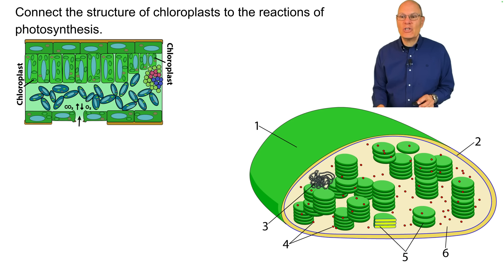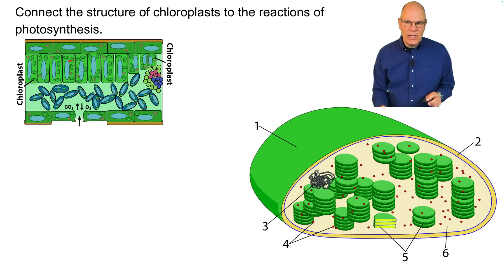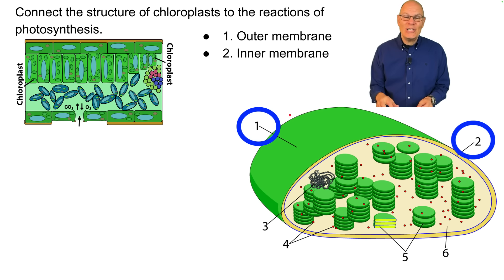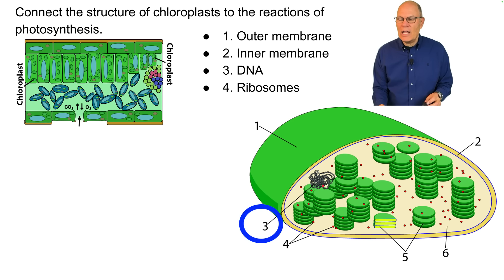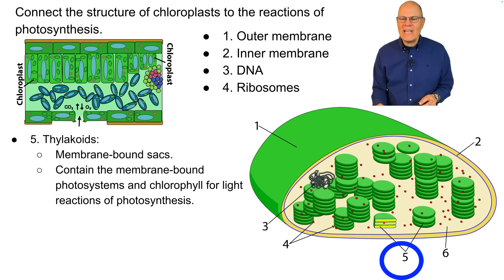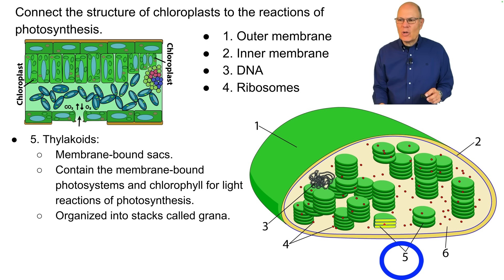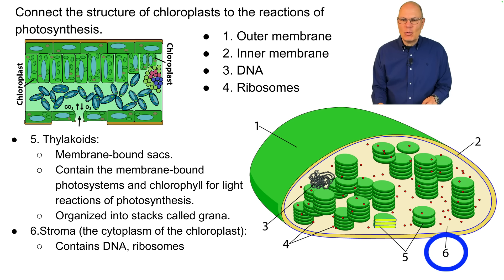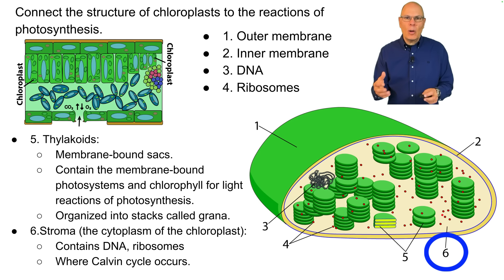Connect the structure of chloroplasts to the reactions of photosynthesis. Chloroplasts are found in cells within the leaf — many per cell. The chloroplast has an outer membrane and an inner membrane; the outer membrane is a vestige of its evolutionary origins. It also contains DNA and ribosomes, vestiges of the fact that it was once an independent living cell. Thylakoids are membrane-bound sacs containing the photosystems and chlorophyll for the light reactions, organized into stacks called grana. Surrounding them is the stroma — essentially the cytoplasm of the chloroplast — which contains DNA, ribosomes, and is where the Calvin cycle occurs.